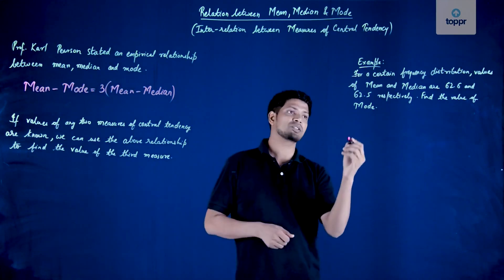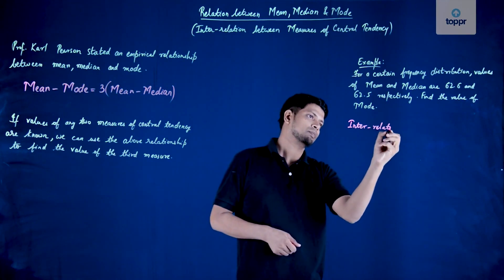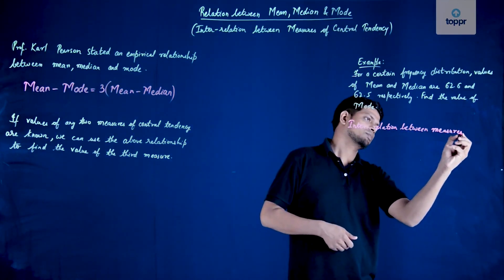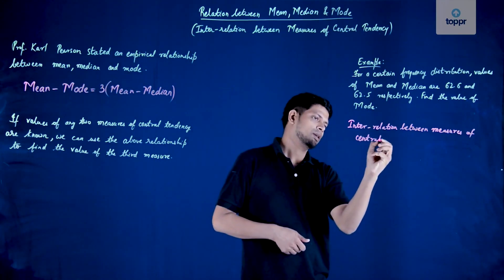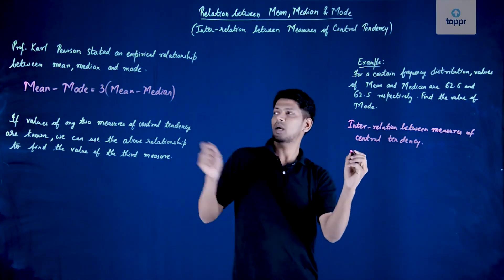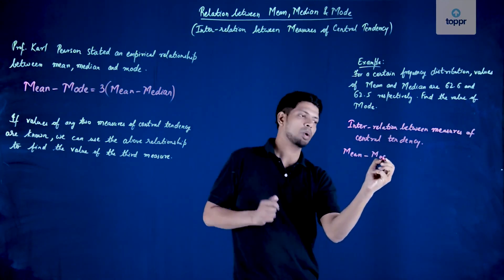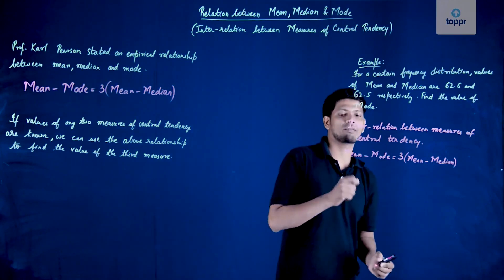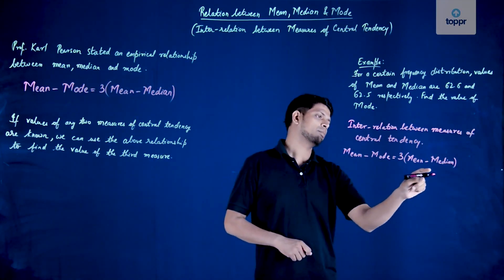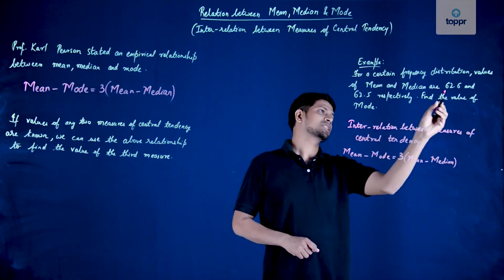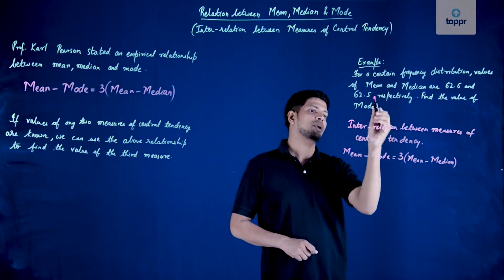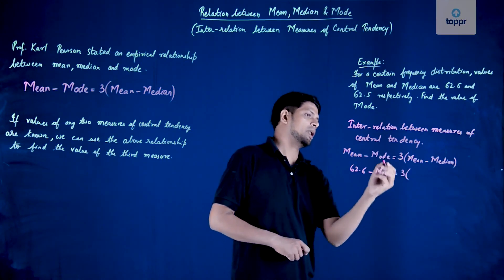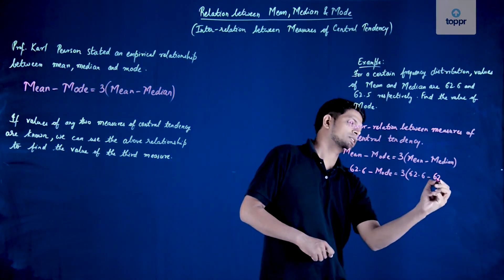First, we write the interrelationship between measures of central tendency: mean minus mode is equal to three times mean minus median. Substituting the given values, mean is 62.6 and median is 62.5.